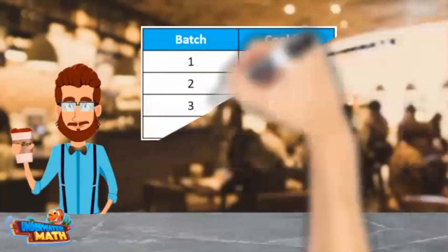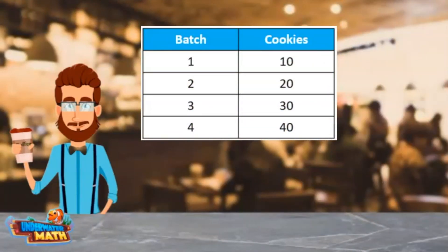Here is another table showing the number of cookies per batch of cookies made. I am looking for the rule. Remember I am looking for the relationship between the left column and the right column.